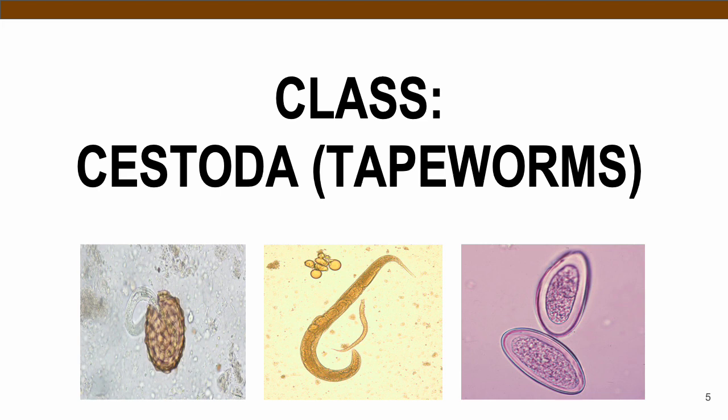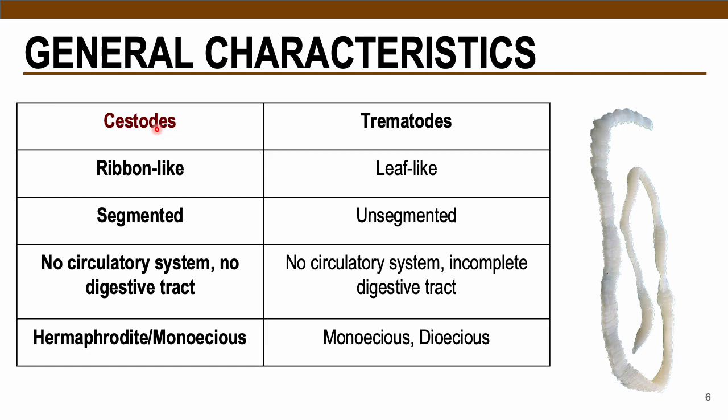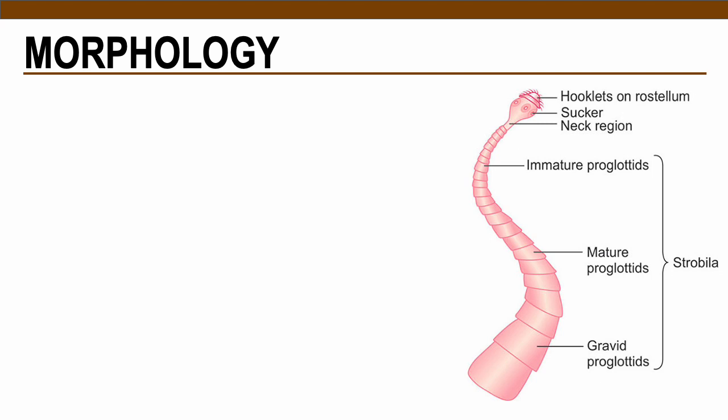Let's start with Class Cestoda or the tapeworms and compare your Cestodes to Trematodes. Class Cestoda are ribbon-like and segmented. There are no circulatory system and digestive tract present in Cestodes, and they are mostly hermaphroditic or monoecious parasites, meaning there is only one single parasite present in the host.